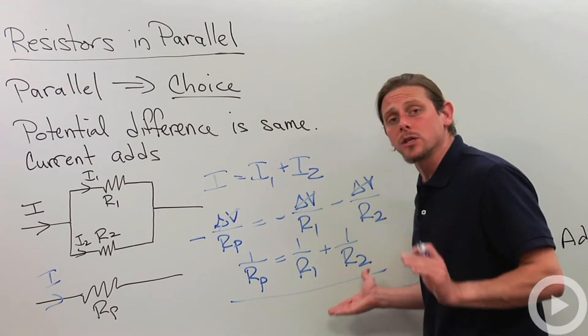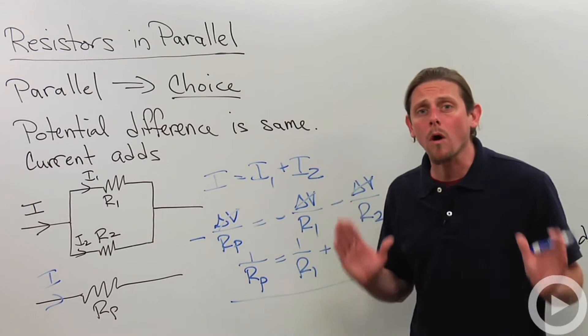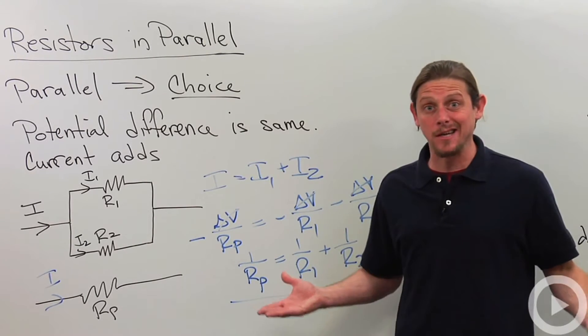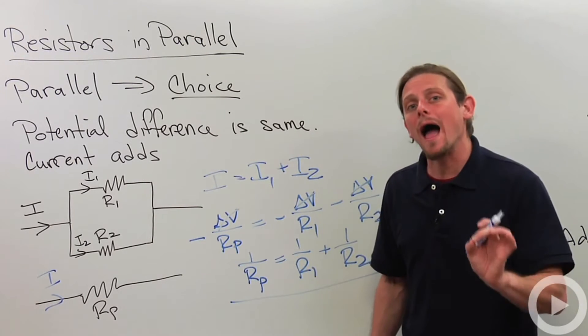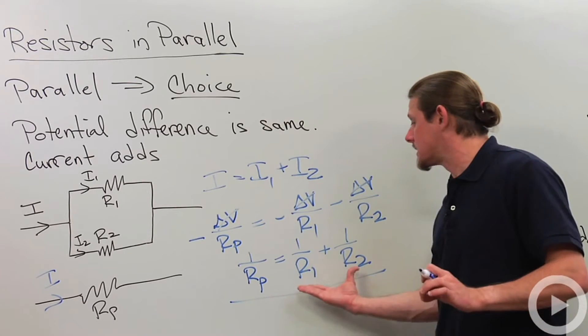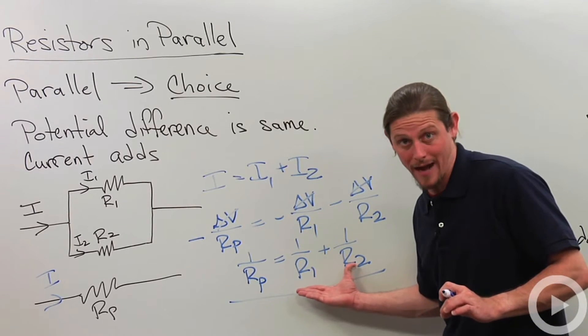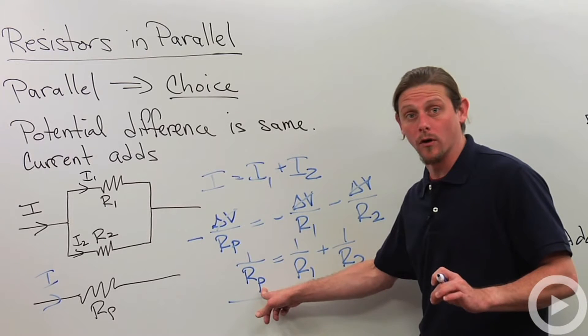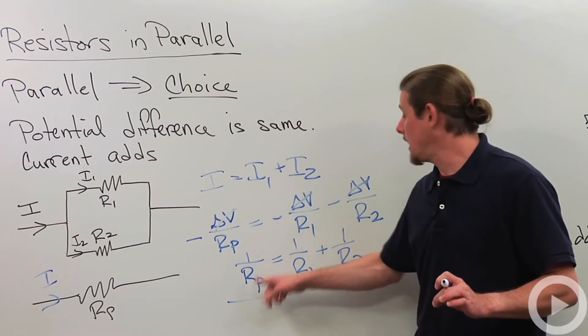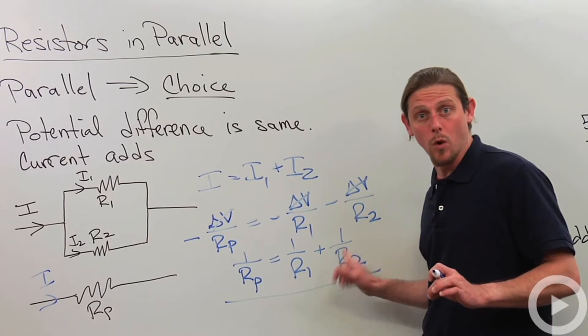So adding resistors in parallel is more complicated than adding them in series. When I add them in series, I just add. When I add them in parallel, what we say is that the reciprocals add. So 1 over the effective resistance equals 1 over R1 plus 1 over R2.